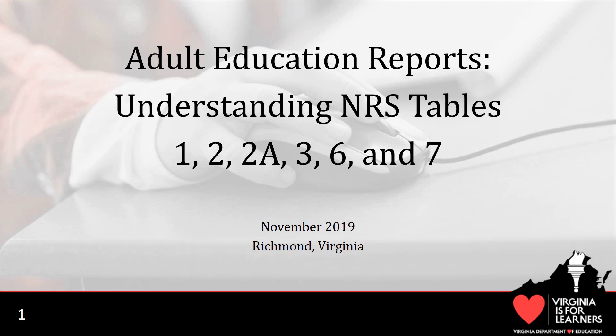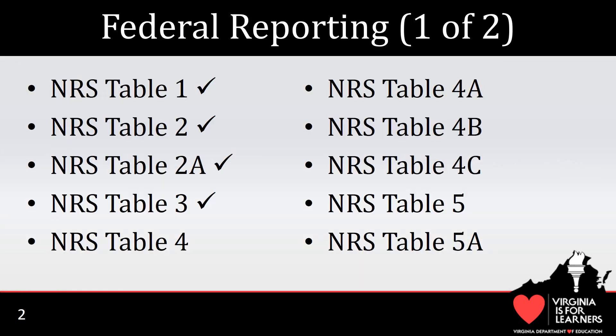These NRS Tables report post-exit indicator performance, also referred to as follow-up outcome attainment. Under the Workforce Innovation and Opportunity Act, state adult education agencies, or Title II agencies, are required to report on the performance of adult education activities delivered with WIOA, state, and local match funding. For Title II reporting, states must submit data in accordance with National Reporting System, or NRS Tables.